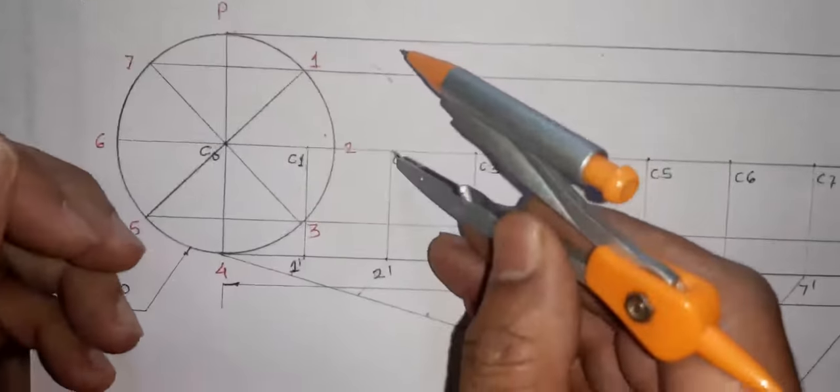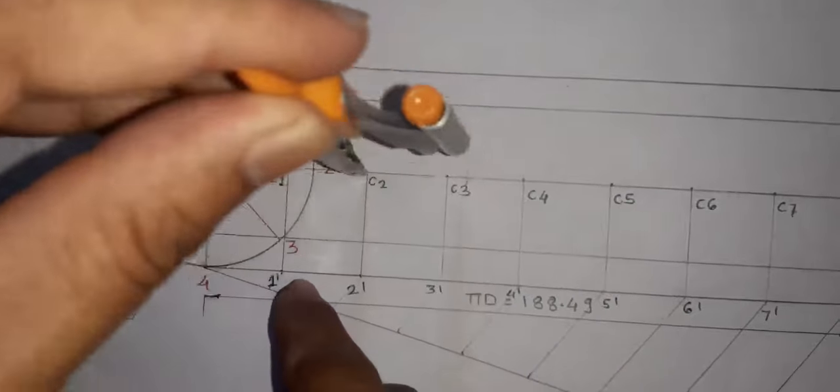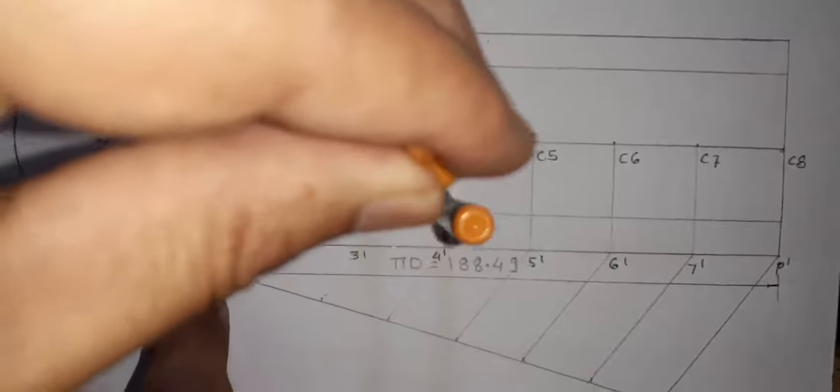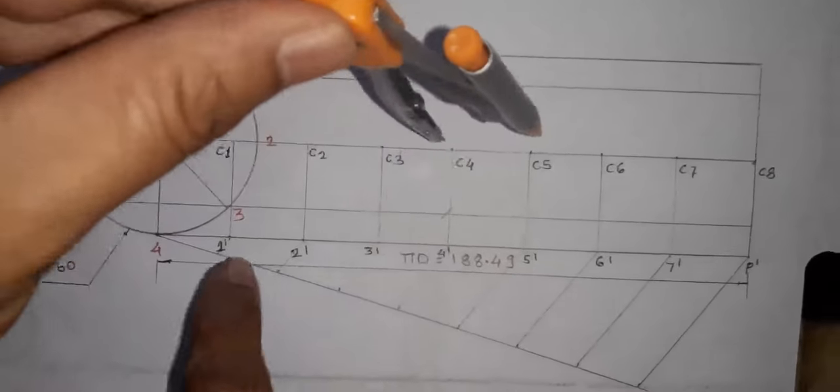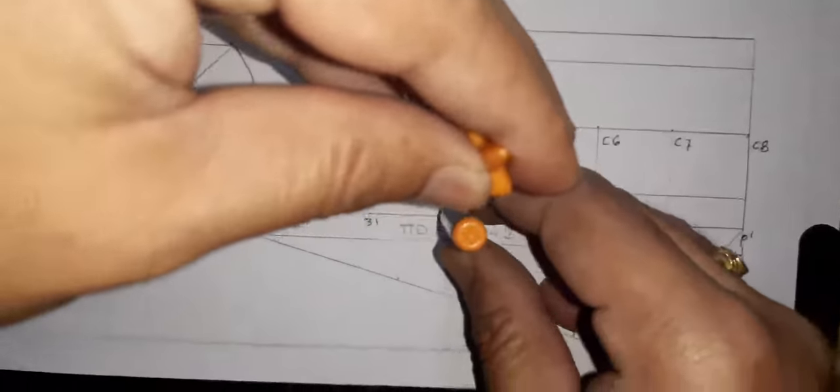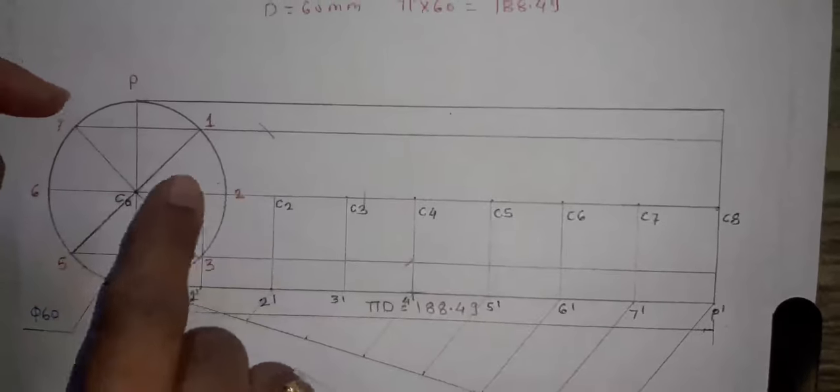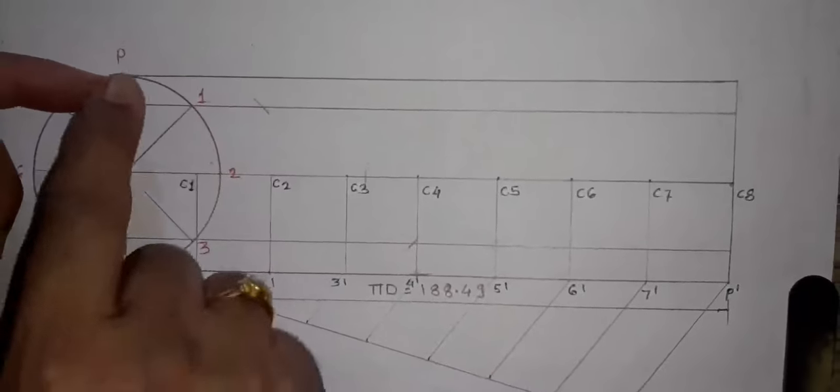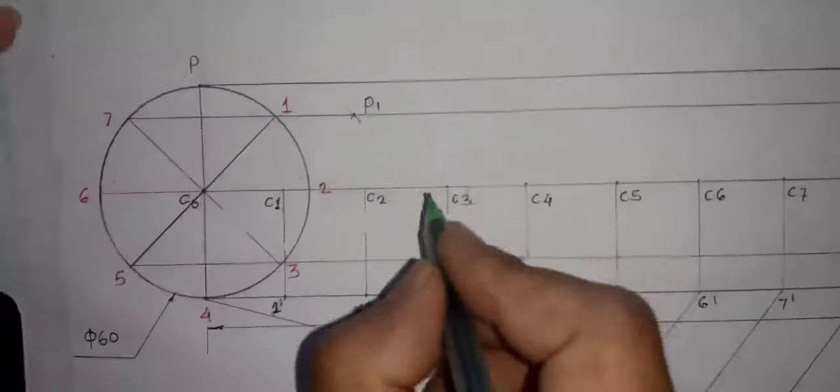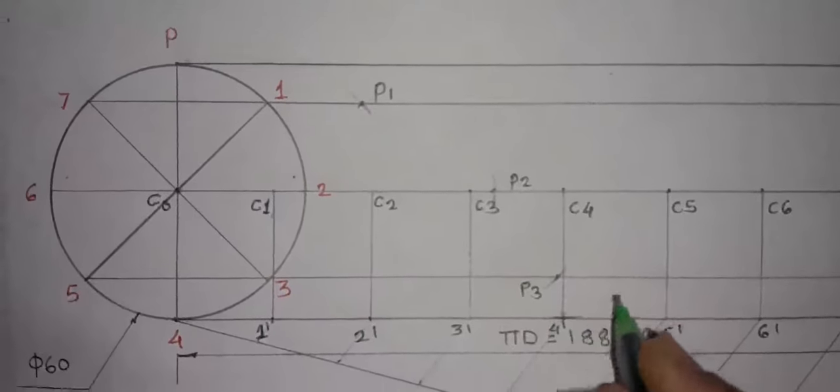Similarly keeping same radius in compass, take new center C2 and cut the projector of 2 in this direction. Now take center C3 and cut the horizontal projector of 3 in this direction. Now center C4 and cut the horizontal projector of 4. So this means half revolution is complete, meaning point P has come from topmost position to ground. So we can label immediately: this point is your point P1, this point is your point P2, this one is P3, and this one is P4.